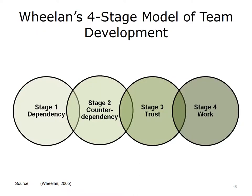Susan Whelan provides a four-stage model of team development. The stages are: Stage 1, Dependency and Inclusion; Stage 2, Counterdependency and Flight; Stage 3, Trust and Structure; and Stage 4, Work.